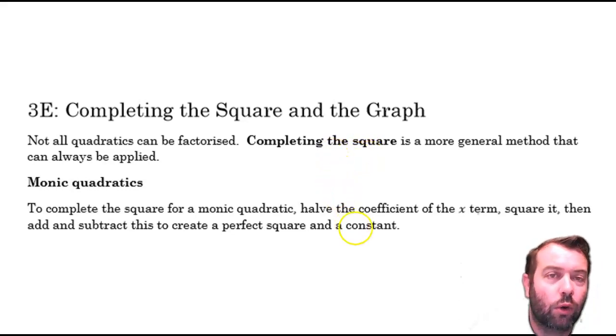there's certainly the easier of these to do. With a monic quadratic, to complete the square, these are the instructions: Halve the coefficient of the x-term, not the x-squared term, not the constant term. Halve that number, then square it, add it, and subtract it both at the same time. What do I mean by that?